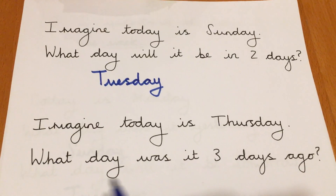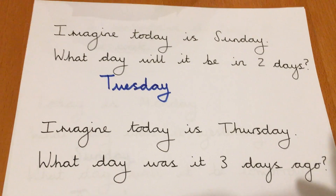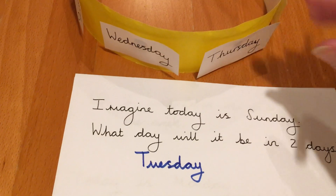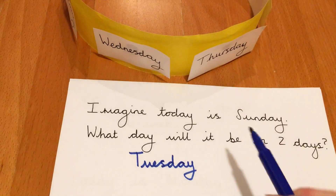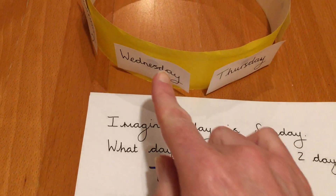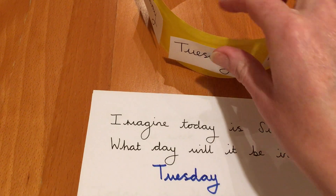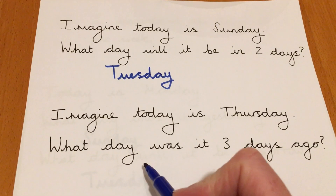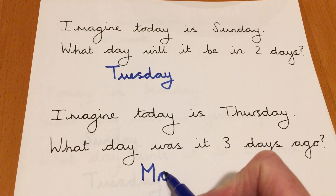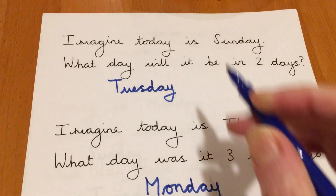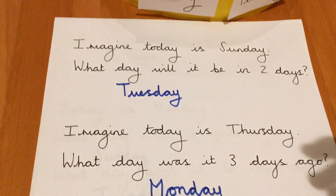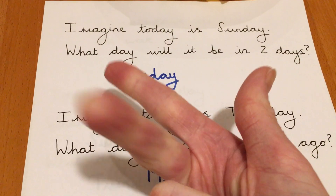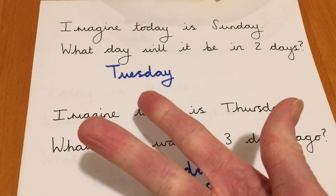Next question. Imagine today is Thursday. What day was it three days ago? So let's find Thursday on this number line. It's like counting back on a number line — we put Thursday in our head and count back three: Wednesday, Tuesday, Monday. So three days ago it was Monday.